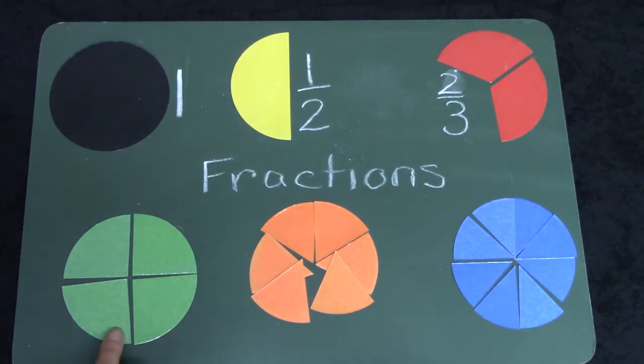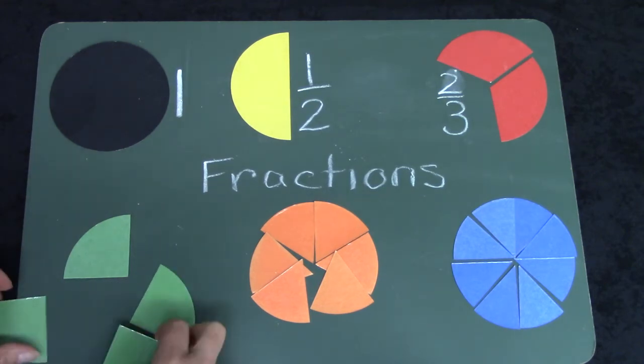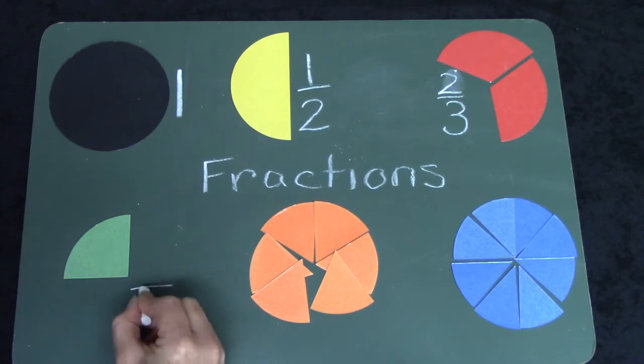Well, let's look at this circle. One, two, three, four. We would need four pieces to make a whole circle. Four.